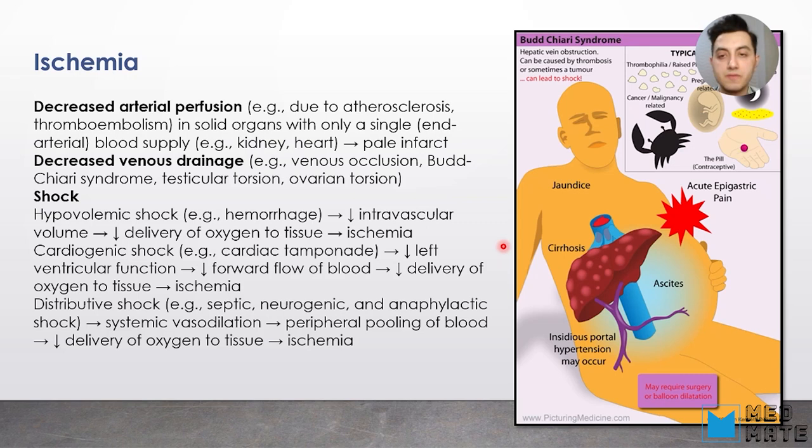Another type of ischemia is decreased venous drainage. A classic example is Budd-Chiari syndrome, which is when there is hepatic vein obstruction caused by thrombosis or tumor. Common symptoms are acute epigastric pain, jaundice, or cirrhosis.